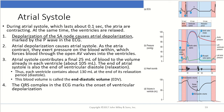During atrial systole, which lasts about 0.1 seconds, the atria contract while the ventricles are relaxed. The depolarization of the sinoatrial node causes atrial depolarization, marked by the P wave on the EKG. The atrial depolarization causes atrial systole, and as the atria contract, they exert pressure on the blood within, forcing blood through the open AV valves into the ventricles. Atrial systole contributes a final 25 milliliters of blood to the volume already in each ventricle.